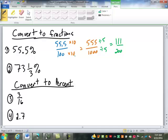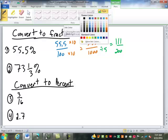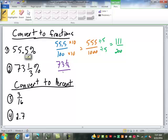73 and a third percent. 73 and a third over 100, then what? Make that an improper fraction. So 73 times 3 is 219, plus 1 is 220, over 3. Divided by 100 over 1 is going to be times 1 over 100. Then I will cross cancel by 20. Make this 11 and 5. It's 11/15.